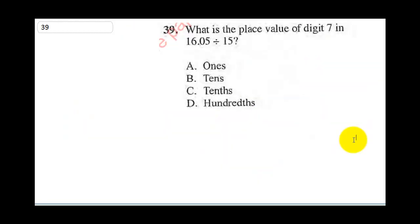So what is the place value of digit 7 in 16.05 divided by 15? Now when you have a question like this, all you need to do, you have 16.05 divided by 15. Take out the decimal place, 1, 2. So we know that this is 2 decimal places. So when we perform our division, we are going to return our decimal place back. So this is going to be 16.05 all divided by 15.